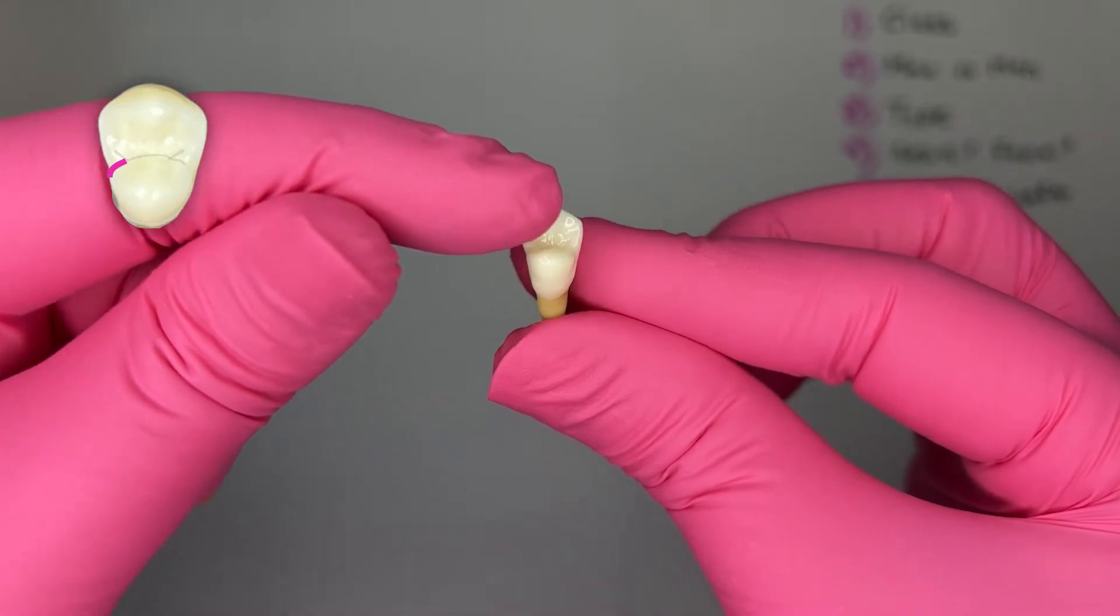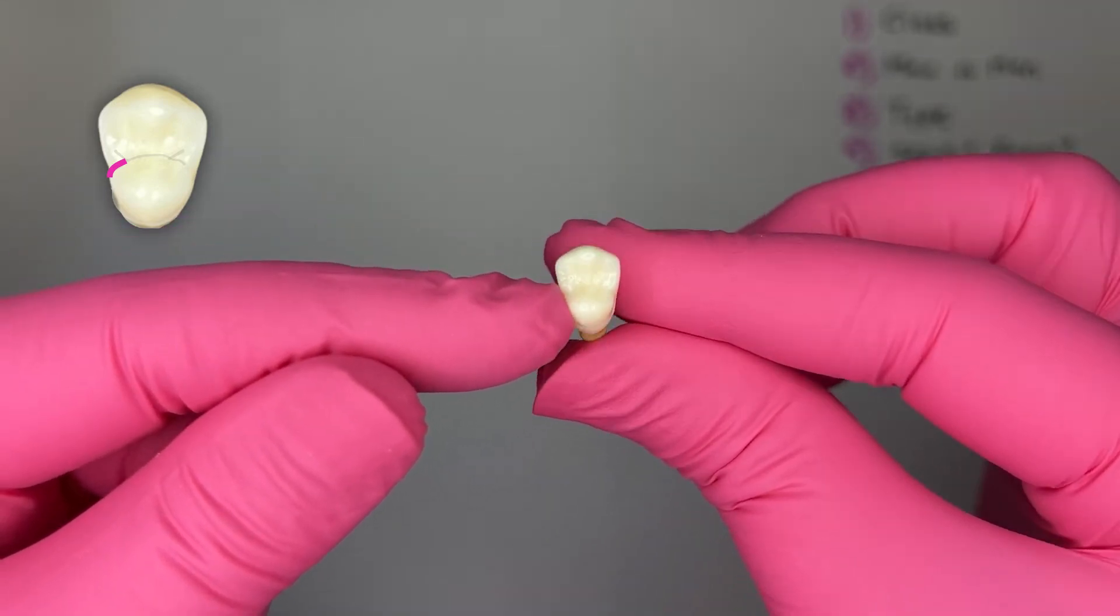For the maxillary first premolar, we look at that groove again, the one that was going from the occlusal to the proximal, specifically the mesial. So this side is the mesial.